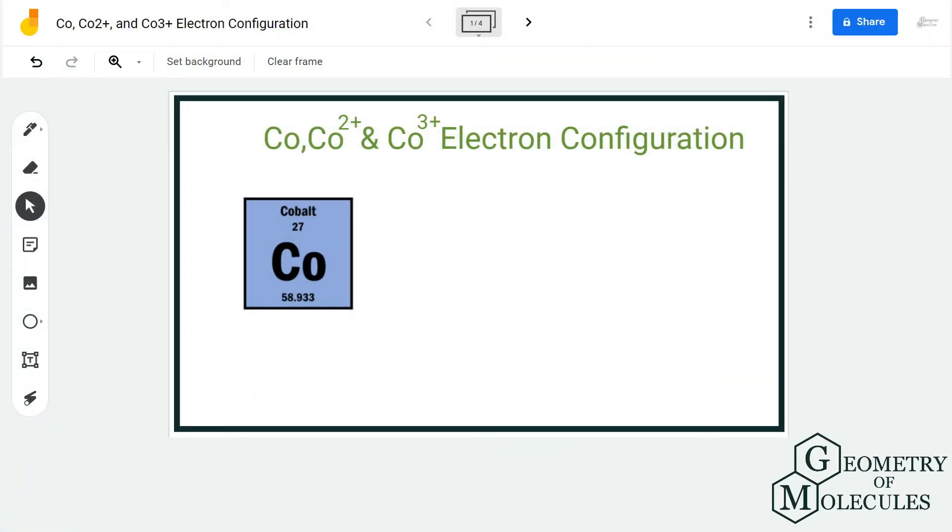Hi guys, welcome back to our channel. In today's video, we're going to show you how to write the electron configuration for Co, Co²⁺, and Co³⁺. To write electron configurations, we first need to know the atomic number so that we can determine the number of electrons.